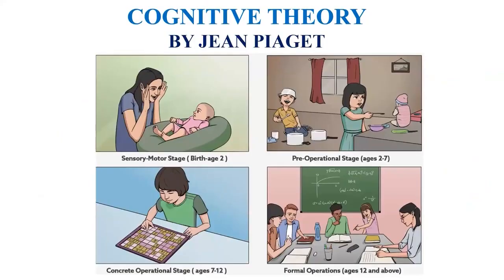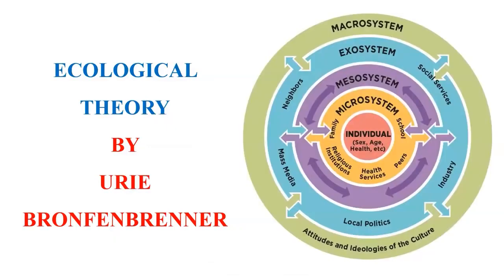Let's understand the options one by one. The first is cognitive theory, given by Jean Piaget. He gave four stages: sensory motor stage, pre-operational stage, concrete operational stage, and formal operational stage. Then we have ecological theory, proposed by Urie Bronfenbrenner.